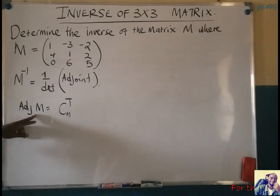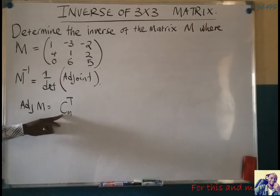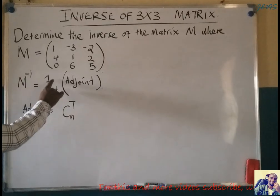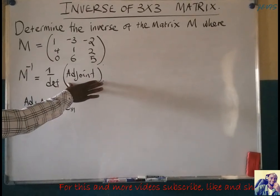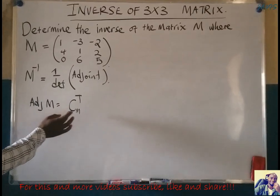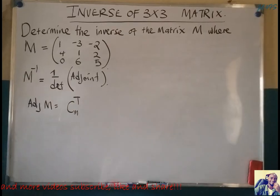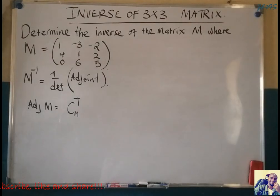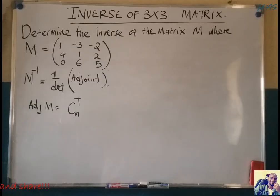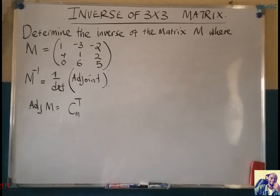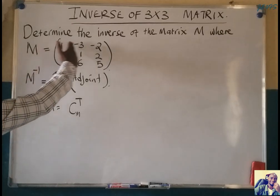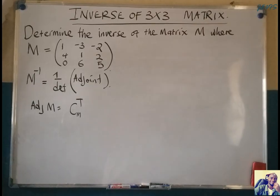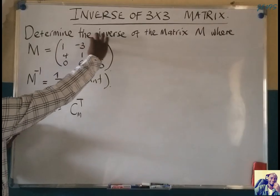The adjoint matrix of M is equal to the transpose of the matrix of cofactors of M. So the procedure is: first we need to find the determinant, then we find the adjoint matrix by transposing the matrix of cofactors. When looking at the rows and columns, you can pick whichever you want to use to find the determinant. I'll use the first row here.